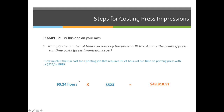Always round the number of hours to two decimal places. When you multiply hours times the price, you should never get a value with more than two decimal places. If your final total cost for the job has more than two decimals, you've done something wrong along the way, because the number of hours should never carry more than two decimal places.